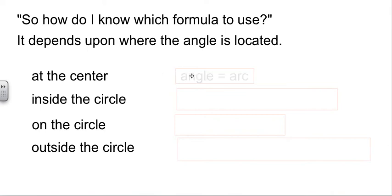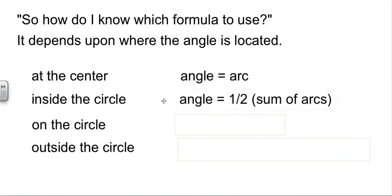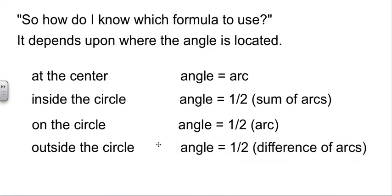If your angle is at the center of the circle, then the angle is actually just equal to the arc. If it's on the inside of the circle, not at the center, but on the inside, then the angle is equal to half the sum. If the angle is on the circle, then it's just half the arc. And if it's outside the circle, then it's half the difference.